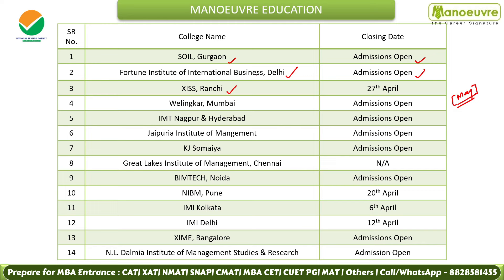Then we have XISS in Ranchi — if you are in HR, this is a good campus for you. The 27th of April is the last date, so before April 27th, fill up the form if you want to go to XISS Ranchi. Then we have Wellinkar Mumbai campus — admission is open, though the Bangalore campus is closed. The form is open for Mumbai, so fill it up. We also have two prestigious IMT campuses — IMT Nagpur and IMT Hyderabad — both forms are open, so you can fill up.